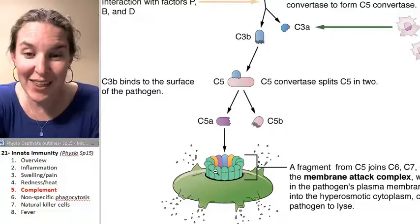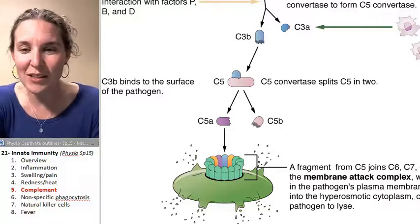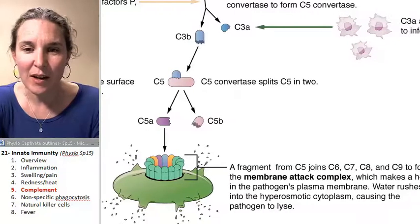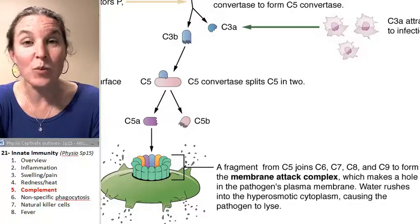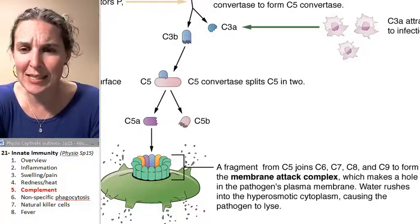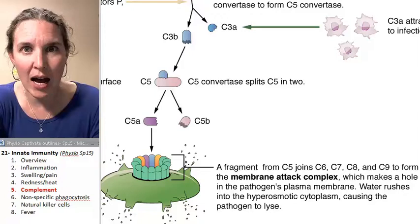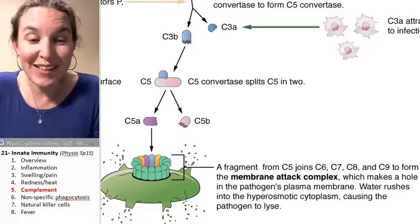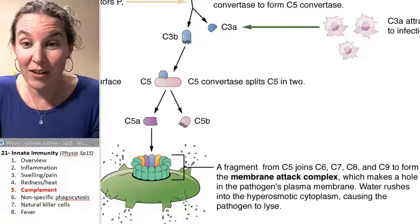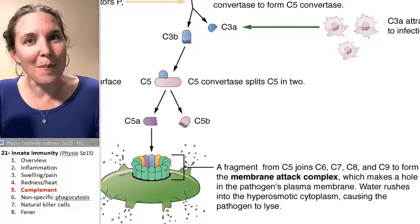But look at the end game. What? They come together and they form, like look at what this says about it. A fragment from C5, which was one of the complement proteins, joins C6, C7, C8, and C9. So all these different complement proteins come together to form the MAC attack.